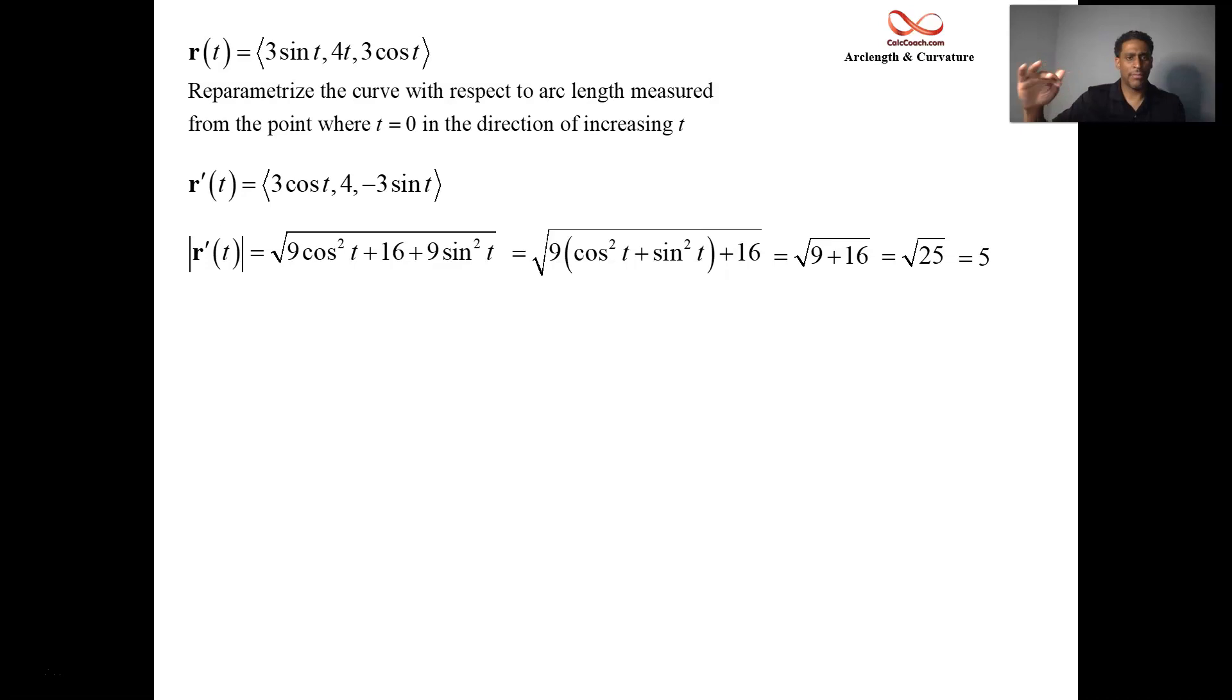And so you integrate five, but now, instead of going from some definite, what did we do last time? Zero to eight. Now we're going from zero to T. So you give me a T, and I'll spit out how far you've traveled. Basically, what's going on is that for every time interval T, you've traveled five units. And so five T is your formula. S equals five T. When T was eight, we traveled 40 units.